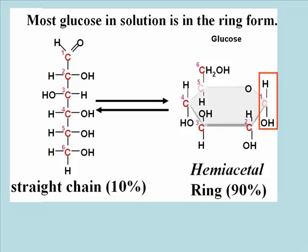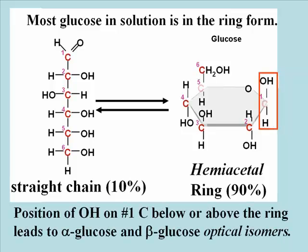A consequence of hemiacetal formation is that the hydroxide on the number 1 carbon can end up either above or below the plane of the ring, creating a racemic mixture of anomers of glucose called alpha and beta glucose. The alpha and beta glucose are present in equal proportions in a racemic mixture of hemiacetal glucose.